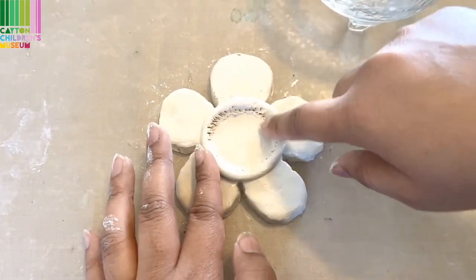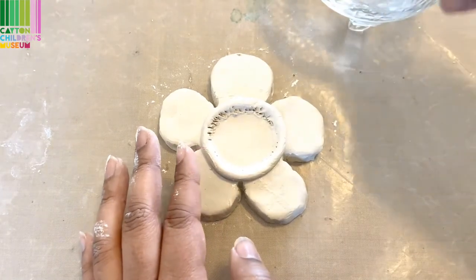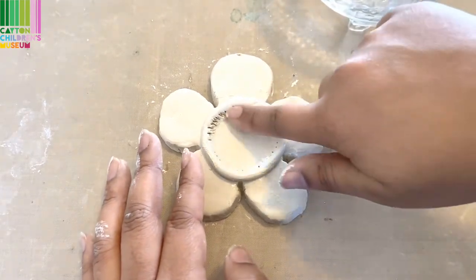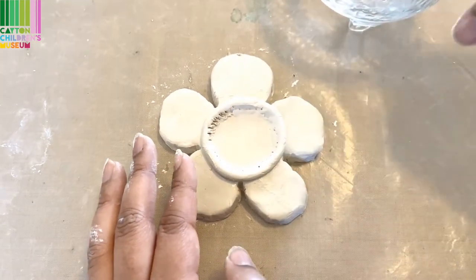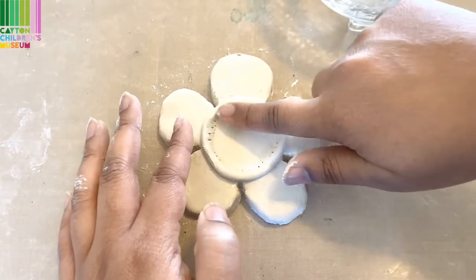Now, I'm okay if it still has some texture there because I think it looks interesting. But if you don't like that, go ahead and just smooth it out all the way.